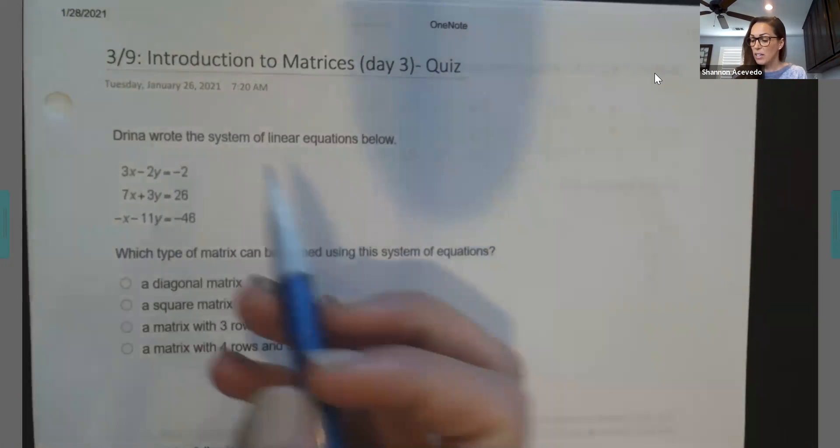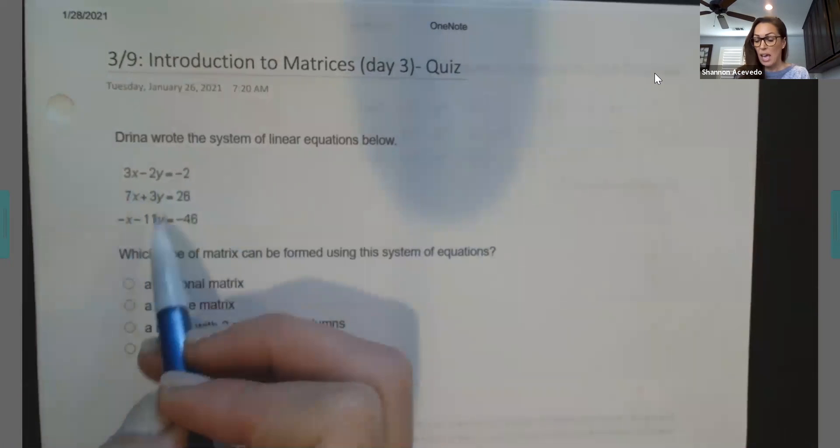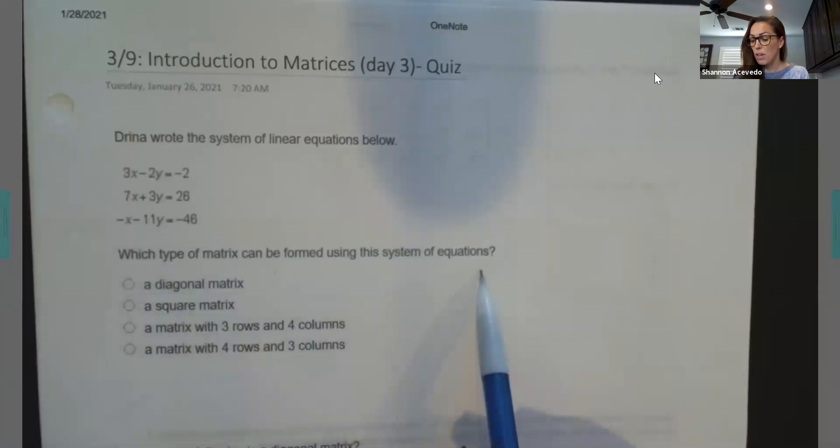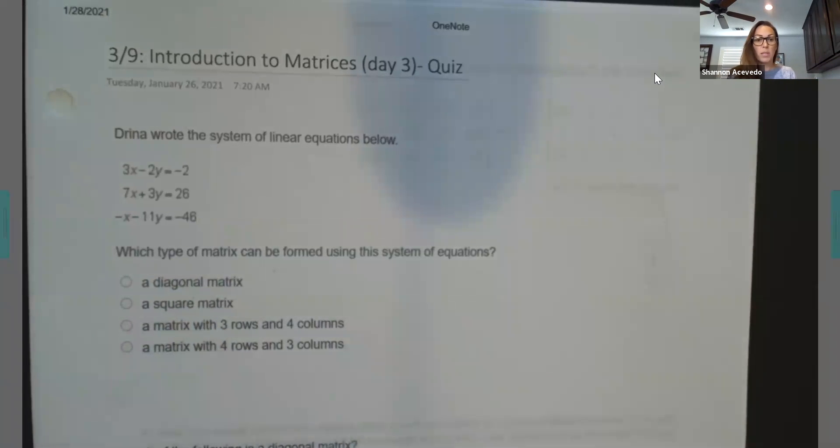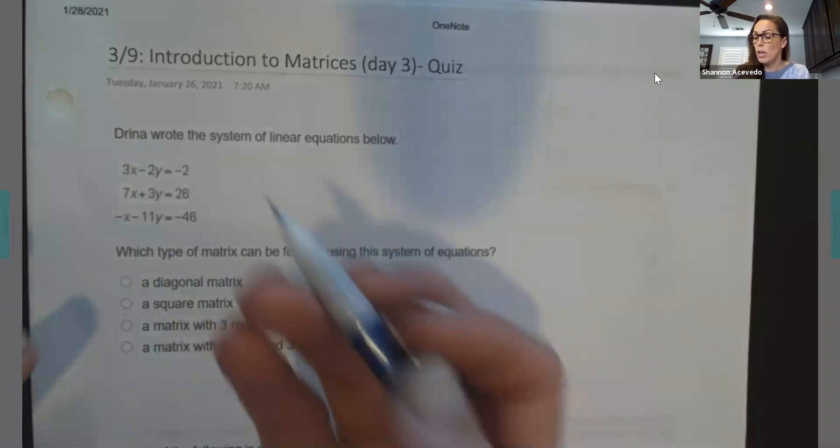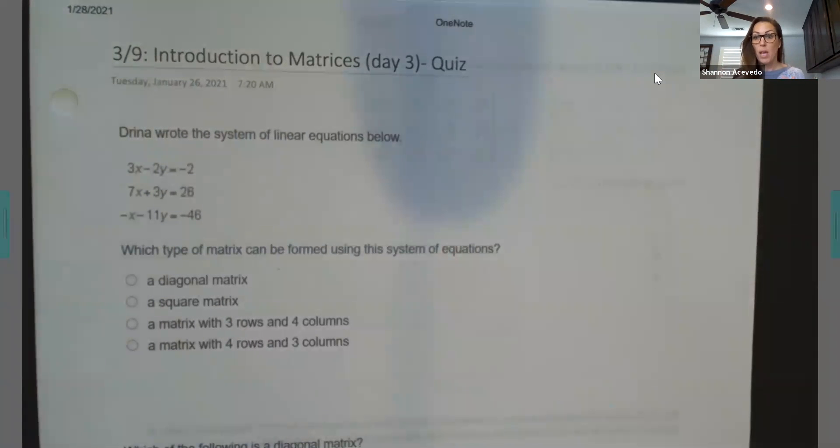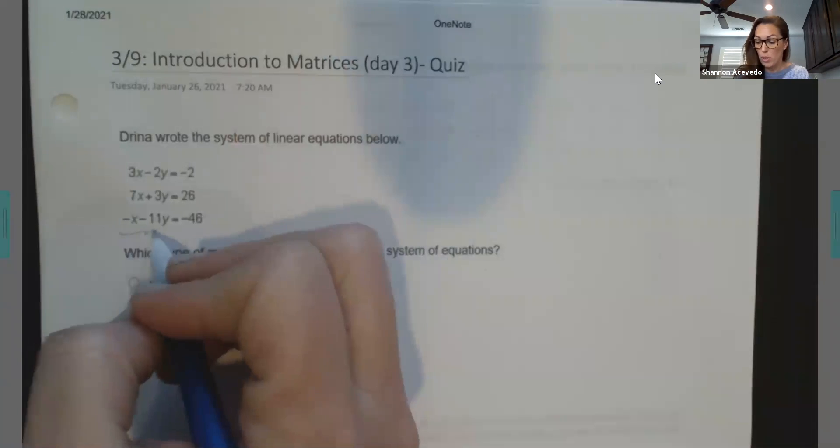It says that we have a linear system. So this is three different linear systems and they have two variables. It says which type of matrix can be formed using the system of equations? A diagonal, a square, a matrix with three rows four columns, a matrix with four rows three columns. So there's a couple different things that we can talk about here. So if we want to use this whole section, we want to use all of them. When I say the whole, I'm talking about it as an augmented matrix where we include the solutions different than the coefficients where we're only using our x and y.